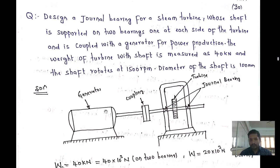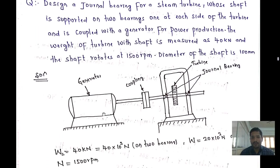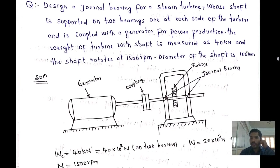The weight of the turbine with the shaft is measured as 40 kilonewtons. The shaft is rotating at a speed of 1500 RPM and the diameter of the shaft is given as 100 mm. The generator, which generates electricity, is connected to the shaft via a coupling flange, with the turbine mounted between the two bearings.